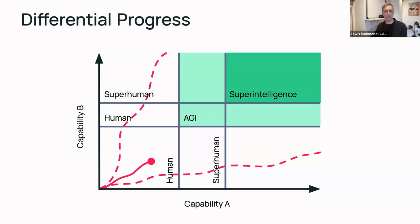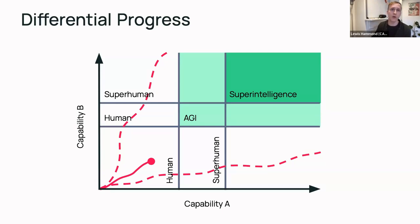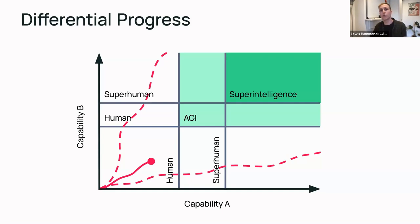The cooperative AI bet is that it would be beneficial to focus on capabilities that push us more toward cooperative capabilities than other sorts. One toy example that motivates this distinction is the idea of a cheap talk channel — a communication channel between players in a strategic decision-making scenario via which they can communicate, but which can't necessarily be used to create binding actions and commitments. Because this communication is non-binding, you could just ignore it, so there's no reason it should cost you anything to have it — and yet it might provide gains by allowing for improved coordination.